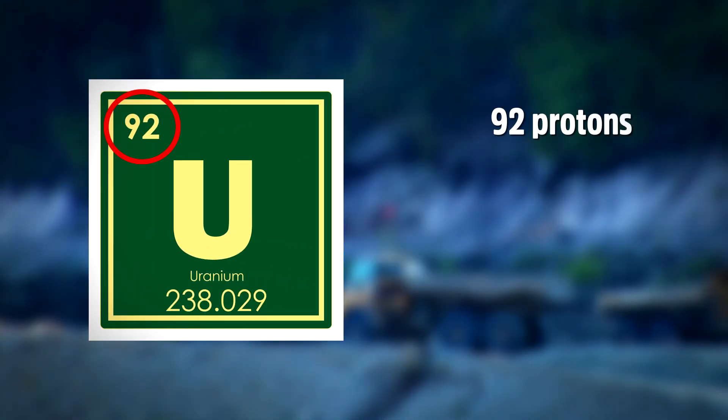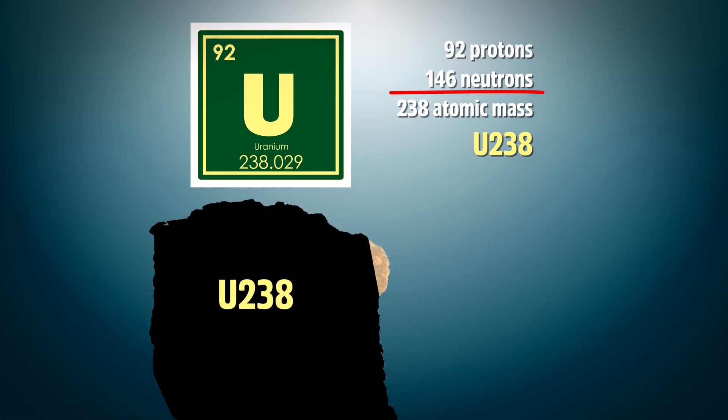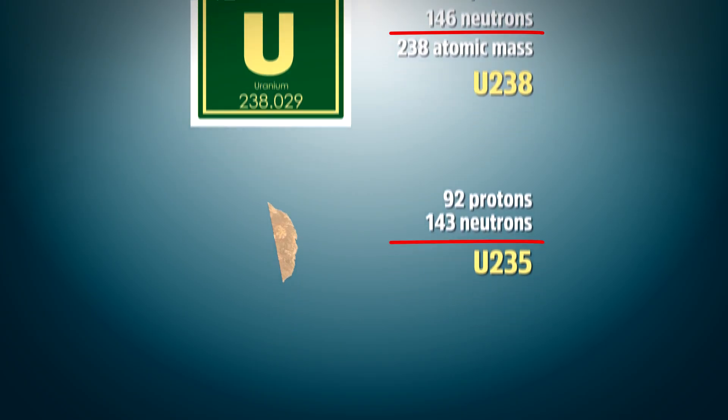A uranium atom has 92 protons and 146 neutrons. Together they give an atomic mass of 238, the U-238. A very small portion of uranium when it is mined is in the form of an isotope U-235. This isotope has the same 92 protons but only 142 neutrons, or three fewer than U-238.